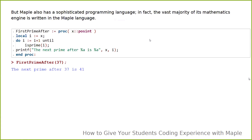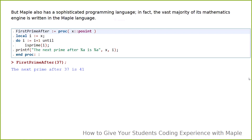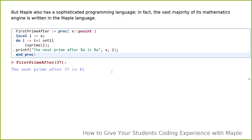Maple also has a sophisticated programming language — that's actually where Maple started, going back almost 40 years. This sophisticated programming language is in fact the language of the majority of its math engine. Here's a quick example done in the Maple code edit region: a Maple procedure that finds the first prime after a given integer, using local variables, a do-until loop, and a print statement. When you run 'FirstPrimeAfter(37)' you get results back. The code is clean and standardized.